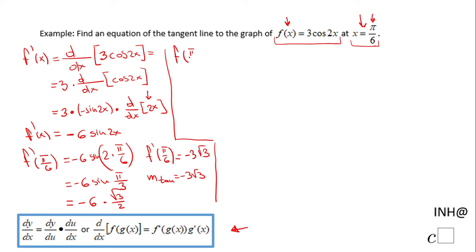f(π/6), that will be 3 times cosine of 2 times π/6. Again, we get here 3 times cosine of π/3. Cosine of π/3 will be 1/2. So f(π/6) is 3/2.